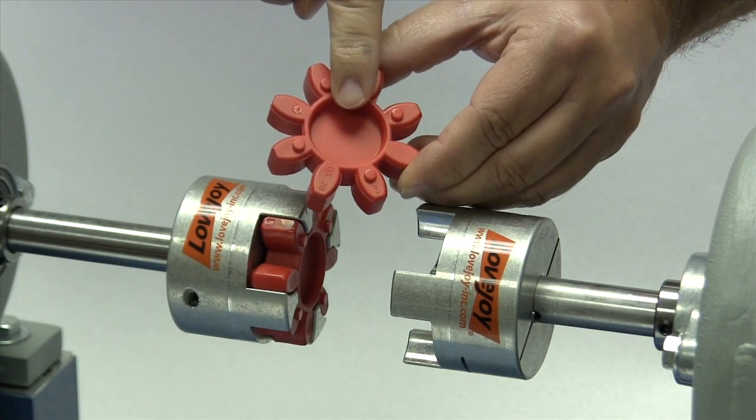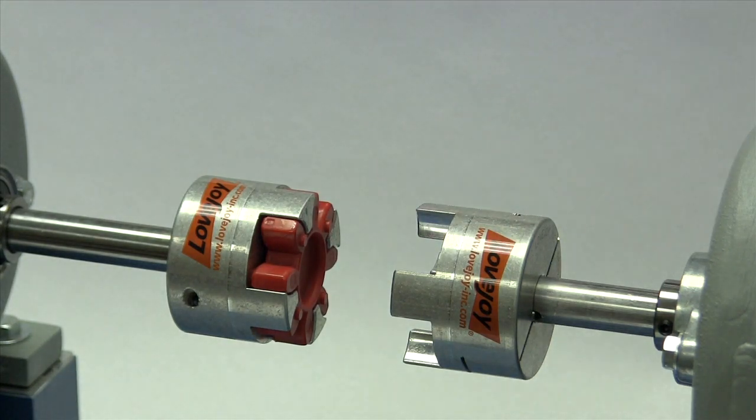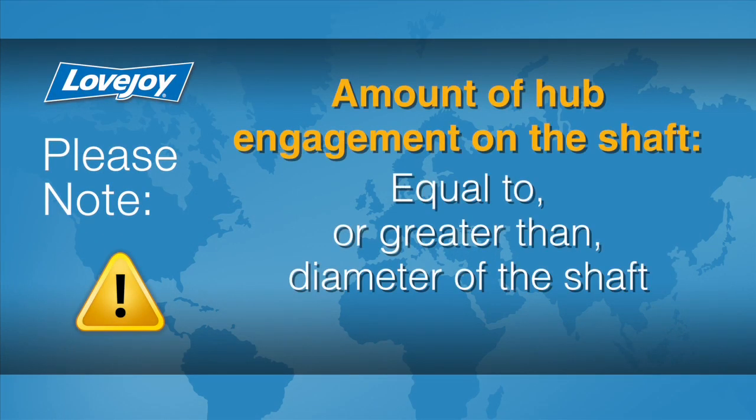If the shaft separation needs to be a little more than the width of the spider, then one hub can extend off of the shaft. The amount of hub engagement on the shaft should be equal to or greater than the diameter of the shaft.